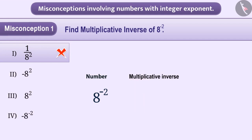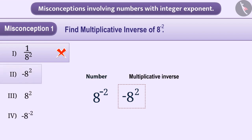Some children write the negative sign of the exponent before the number to get a multiplicative inverse, which gives them a multiplicative inverse of 8 to the power minus 2 as minus 8 to the power 2. So they select option 2, but it is a wrong answer too.